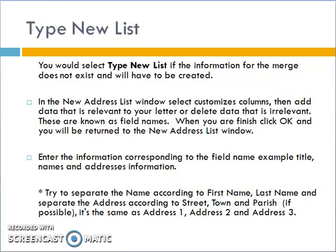If the information for the merge does not exist, we will have to create it. In the New Address List window, we will select Customize Columns, then add data that is relevant to your letter or delete data that is irrelevant. These are known as field names. When you are finished, click OK and you will be returned to the New Address List window, where we enter the information corresponding to the field names — for example, title, name, and address information.